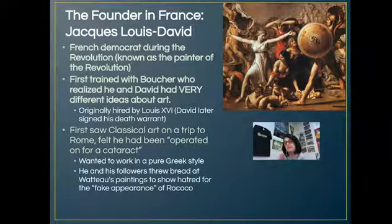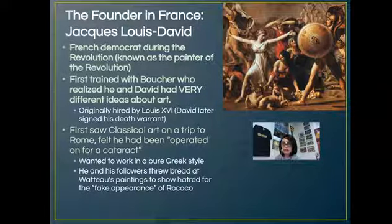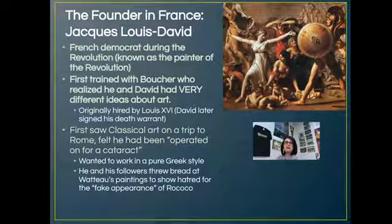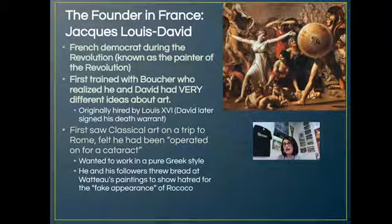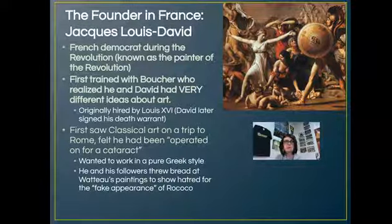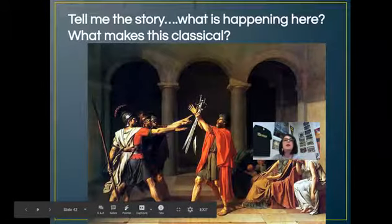David had been to Rome and was classically trained, giving him Greek and Roman foundations as well as a Baroque look from studying in Italy. He famously said that when he went to Rome, he felt like he'd been operated on for a cataract — he could now see clearly what painting should be about. He and his followers so openly despised Rococo that they would throw bread at Rococo paintings to demonstrate how fake and unworthy they considered them.